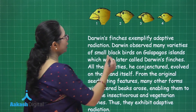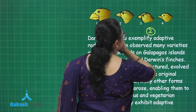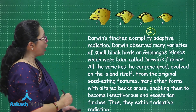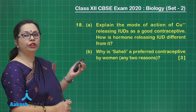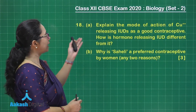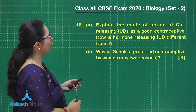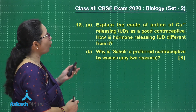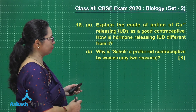Writing the example correctly will fetch you the remaining two marks, and that is how the three marks are justified for question 17. Now let us move on to question number 18, which has two parts A and B. Part A is: explain the mode of action of copper releasing IUDs as a contraceptive. How is a hormone releasing IUD different from it?